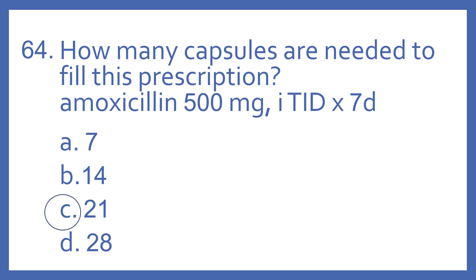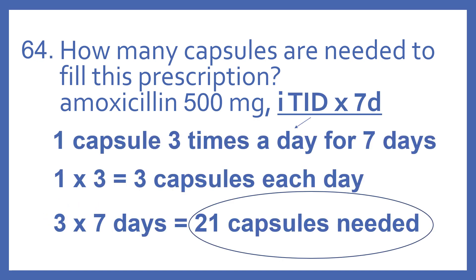The answer is C, 21. 1 TID times 7D means one capsule, three times a day for seven days. So one times three — that would be three capsules each day, the total amount for each day. For seven days, so three times seven, and that gives us 21 capsules needed.